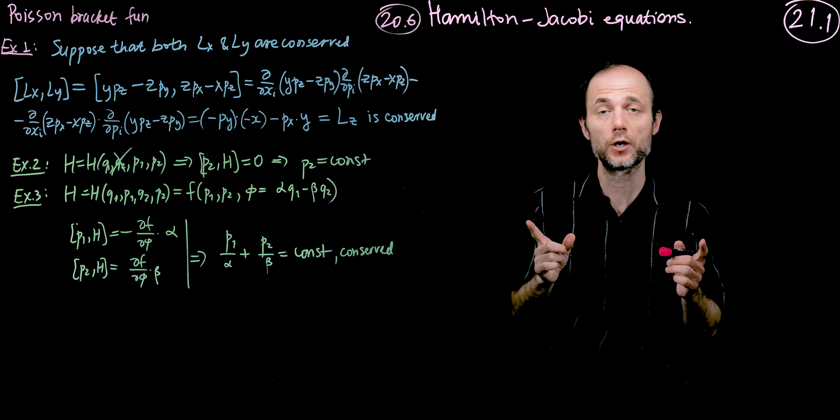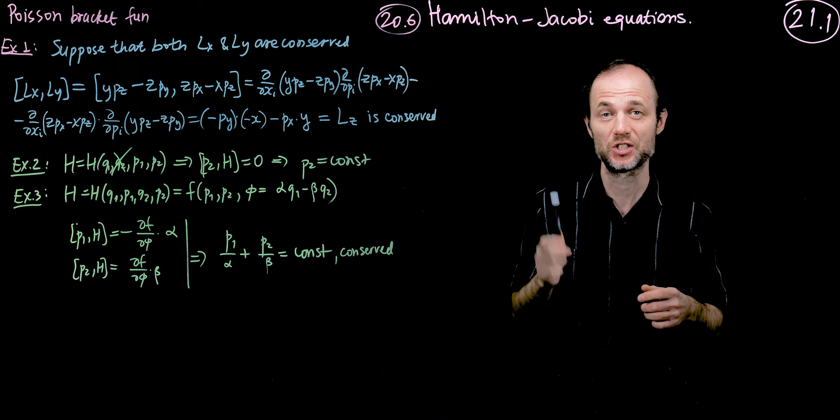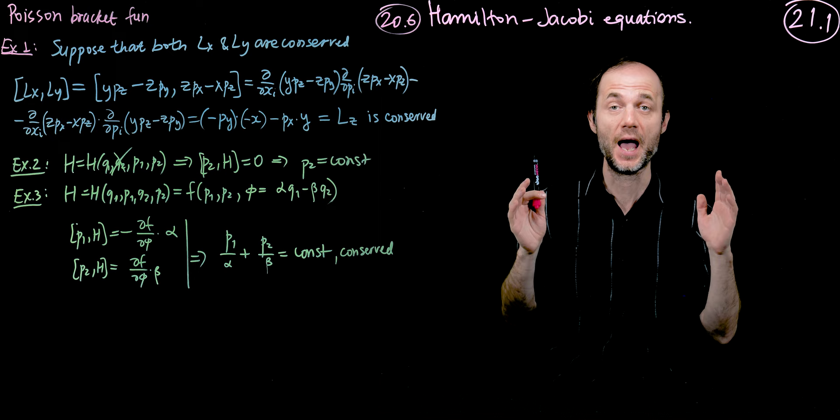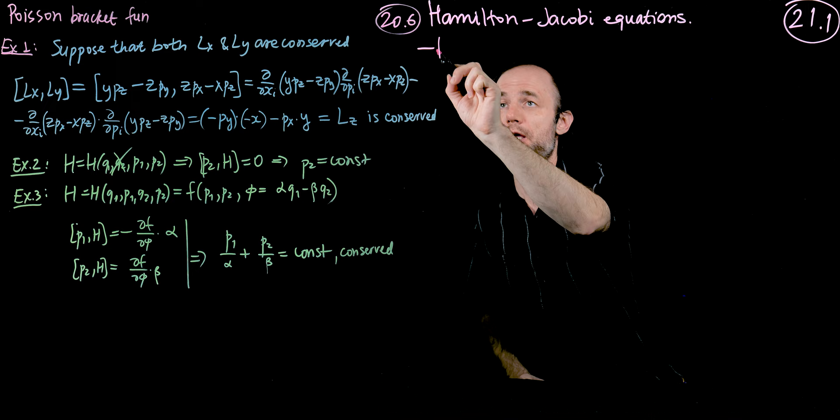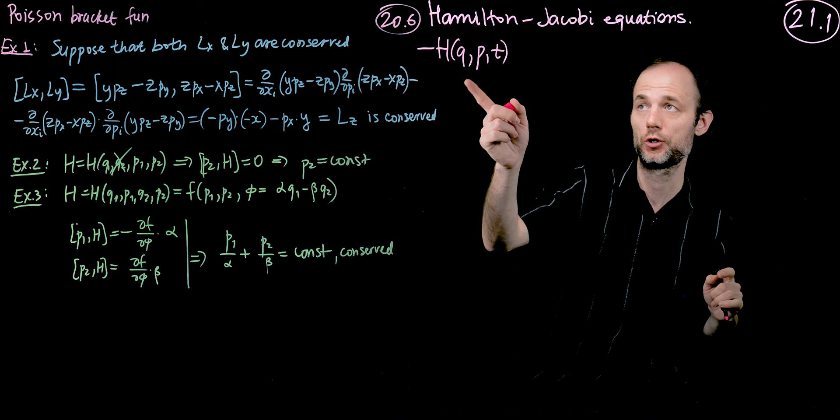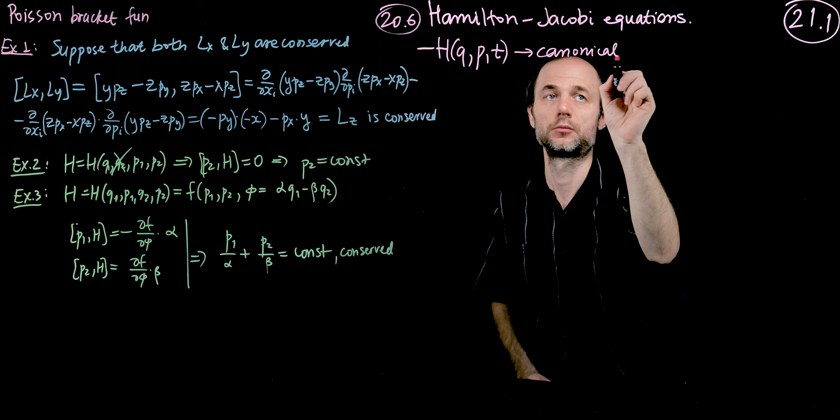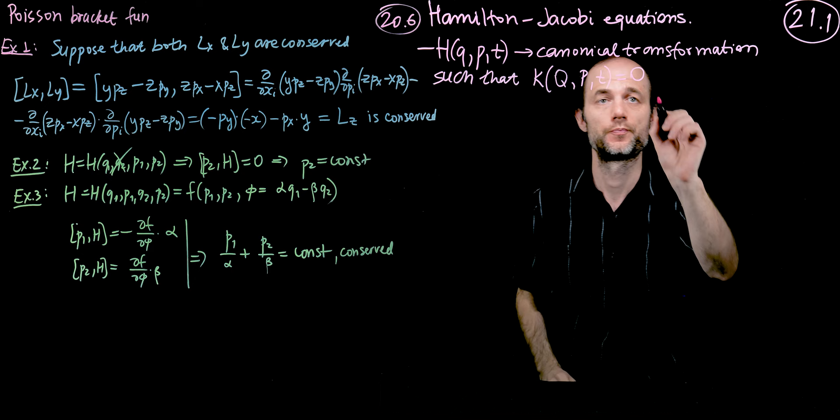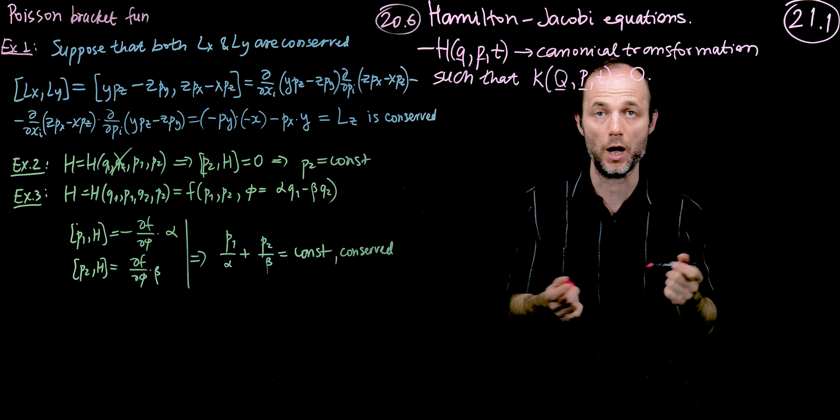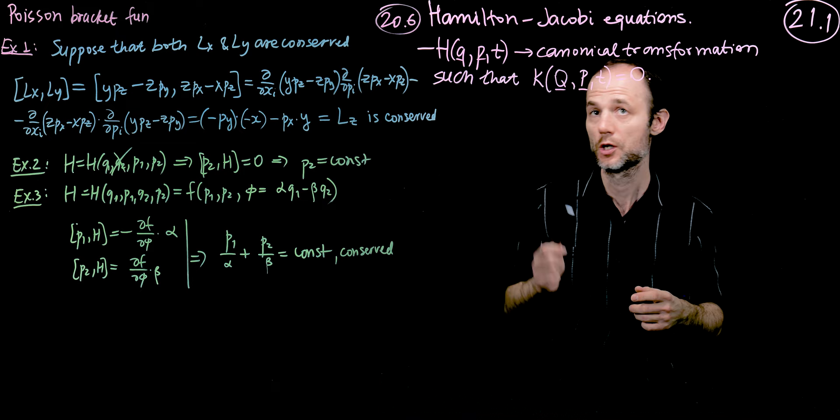We are going to come up with a canonical transformation such that our new Hamiltonian, the Cameltonian, vanishes identically. So if we start with a Hamiltonian H of q, p, and t, we're going to come up with a canonical transformation such that the new Hamiltonian vanishes. Of course q, p, old and new can be vectors, so they can have multiple degrees of freedom.